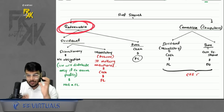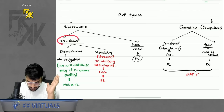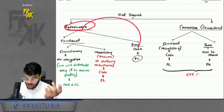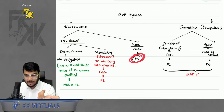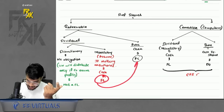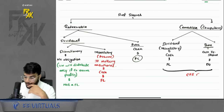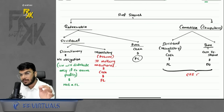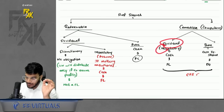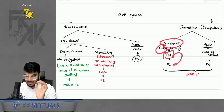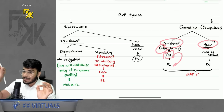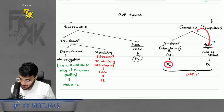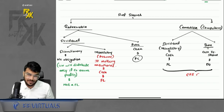But if the preference shares are compulsory convertible — mandatory dividend paid in cash, so it is FL — but for principal the company gives own equity shares. So little FL, little equity — it becomes a CFI. Similarly, under debentures, if they are convertible but not compulsory convertible, the option for conversion is with either the holder or the issuer.